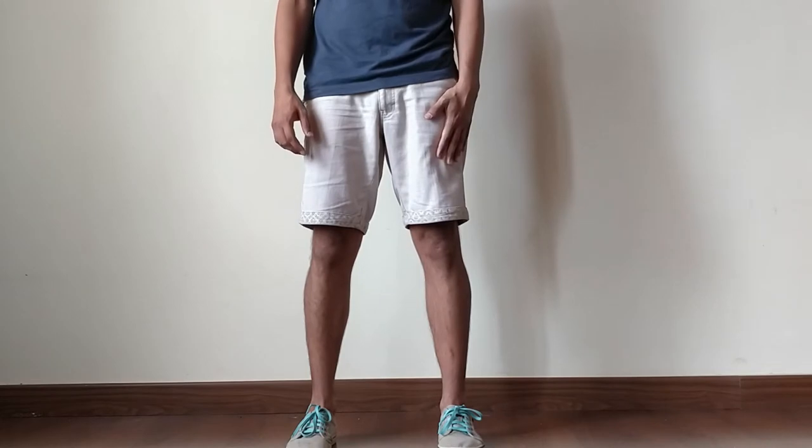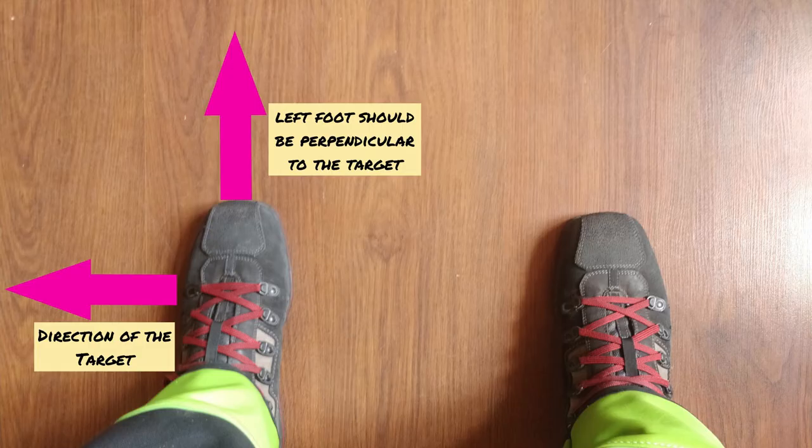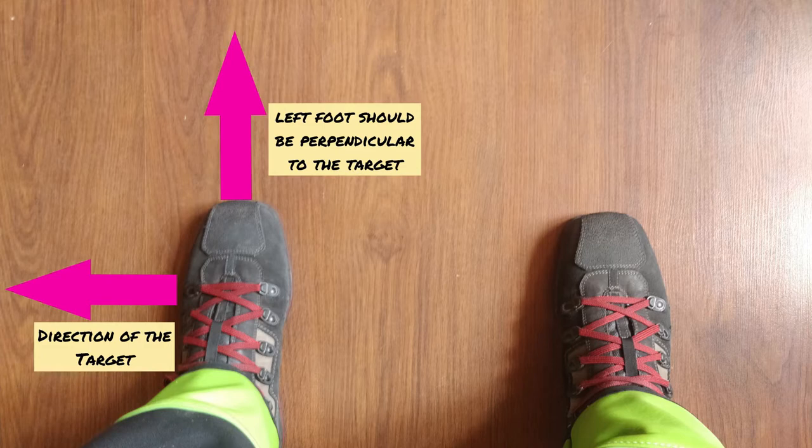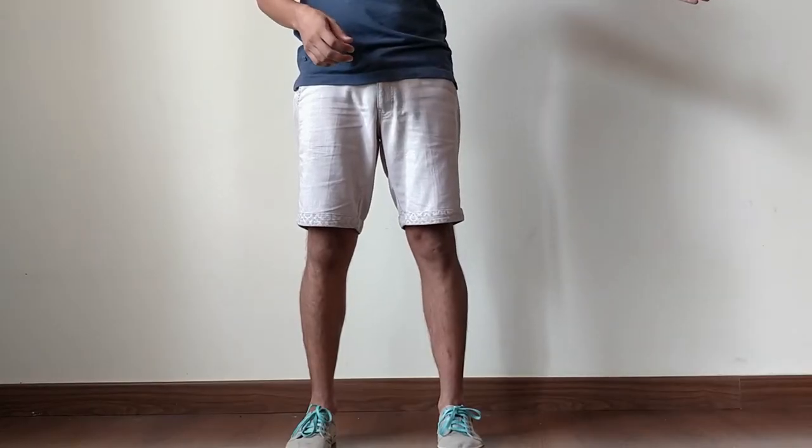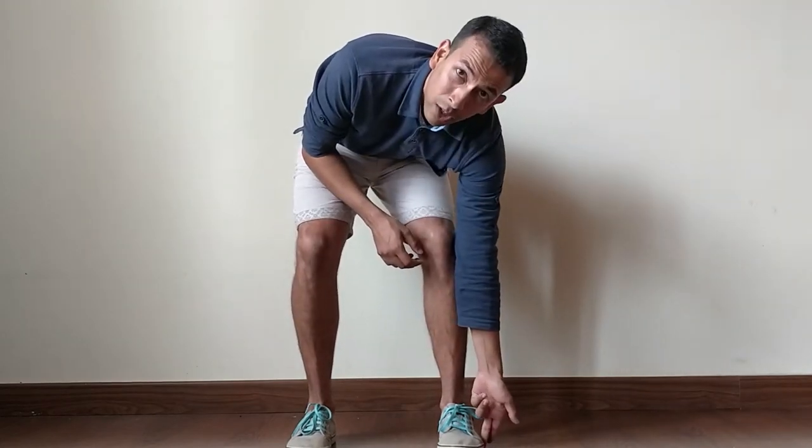We will start with our left leg. Assuming the target is in this direction, then your left leg should be perpendicular to the target. What I mean by perpendicular is, if I draw a straight line from the target all the way to the ground, it should cut it in the middle of my foot.